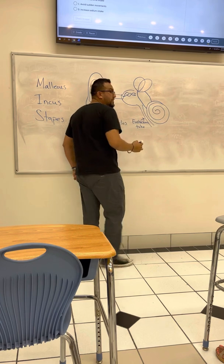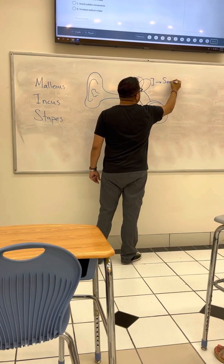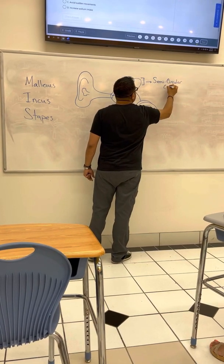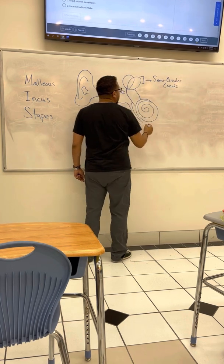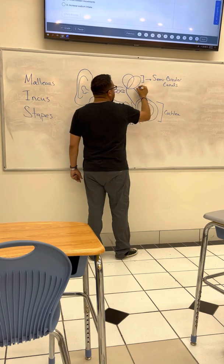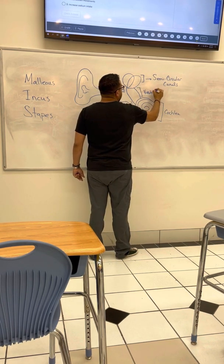Let's call it the vestibule. So this right here, they're known as semicircular canals. This right here is known as the cochlea. This part right here is known as the vestibule.